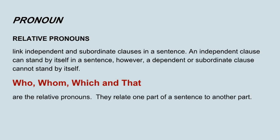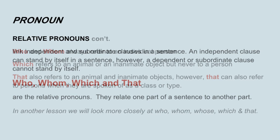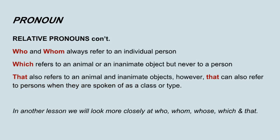Relative pronouns link independent and subordinate clauses in a sentence. An independent clause can stand by itself in a sentence; however, a dependent or subordinate clause cannot stand by itself. Who, whom, which, and that are the relative pronouns. They relate one part of a sentence to another part. Who and whom always refer to an individual person. Which refers to an animal or an inanimate object, but never to a person. That also refers to an animal and inanimate objects; however, that can also refer to persons when they are spoken of as a class or type. In another lesson, we will look more closely at who, whom, whose, which, and that.